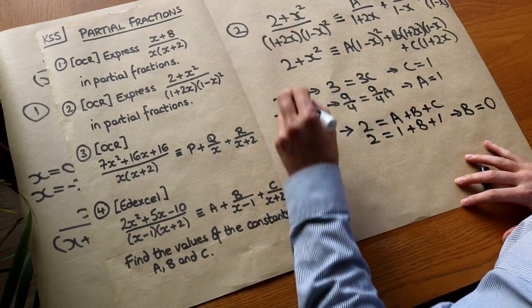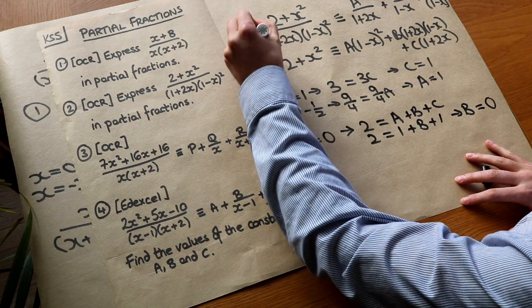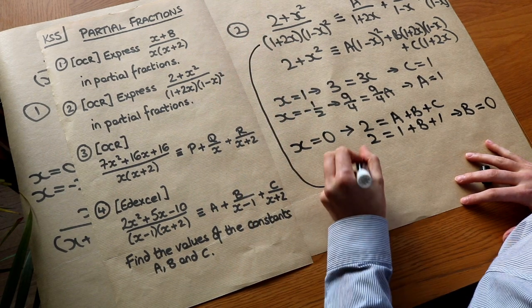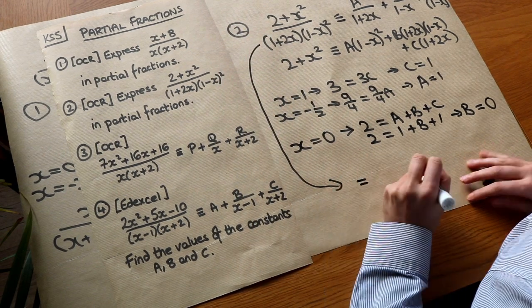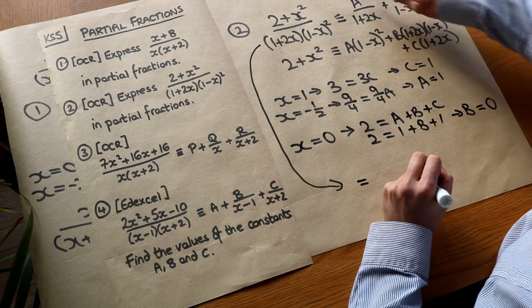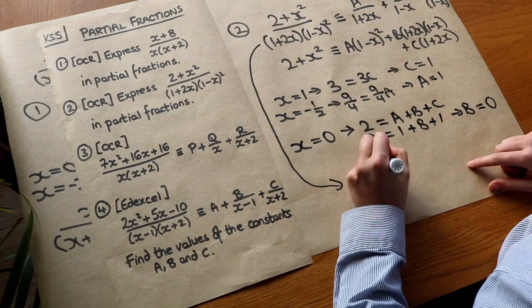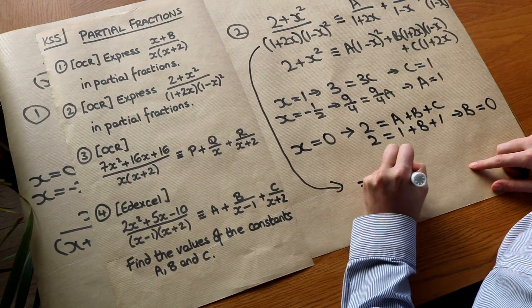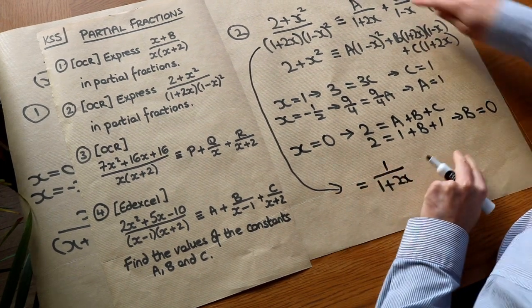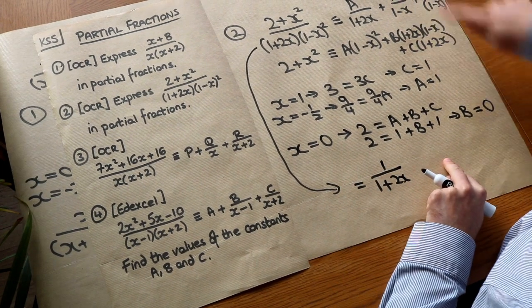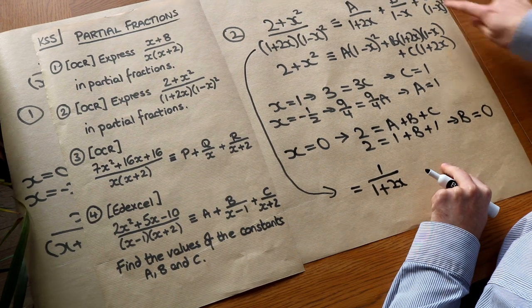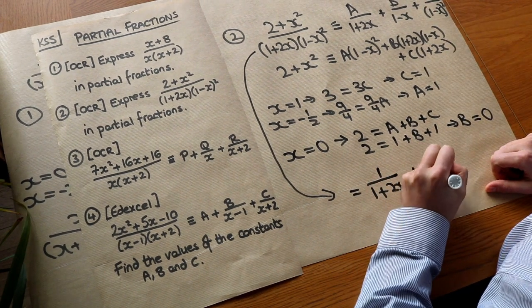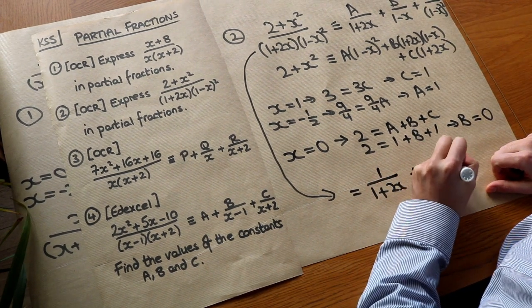So the final answer is that this expression equals 1/(1+2x) — with no B term since B=0 — plus 1/(1−x)².